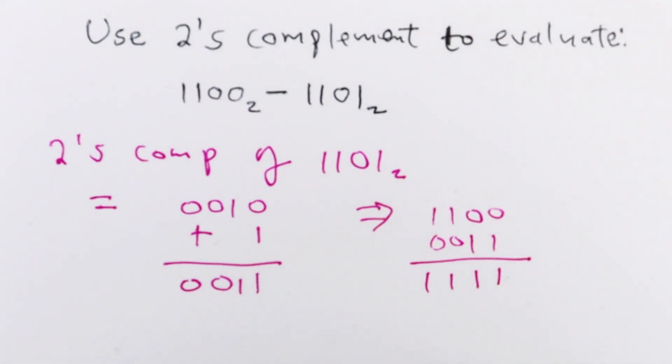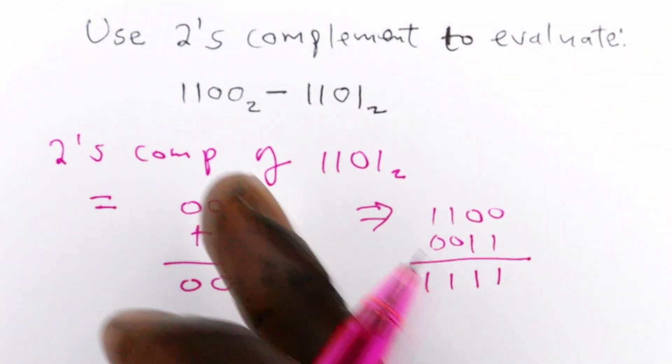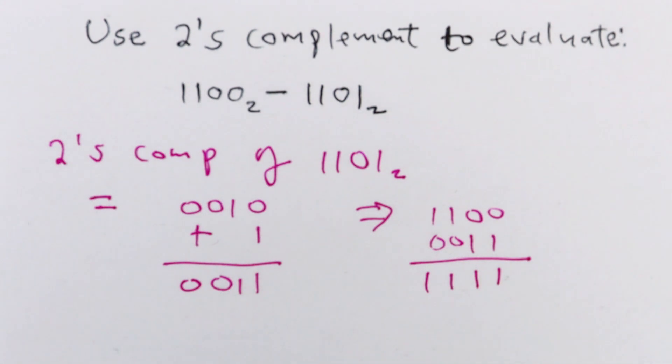So that is what you get when you add the 2's complement of the number you are subtracting to the first number, the one you are subtracting from.